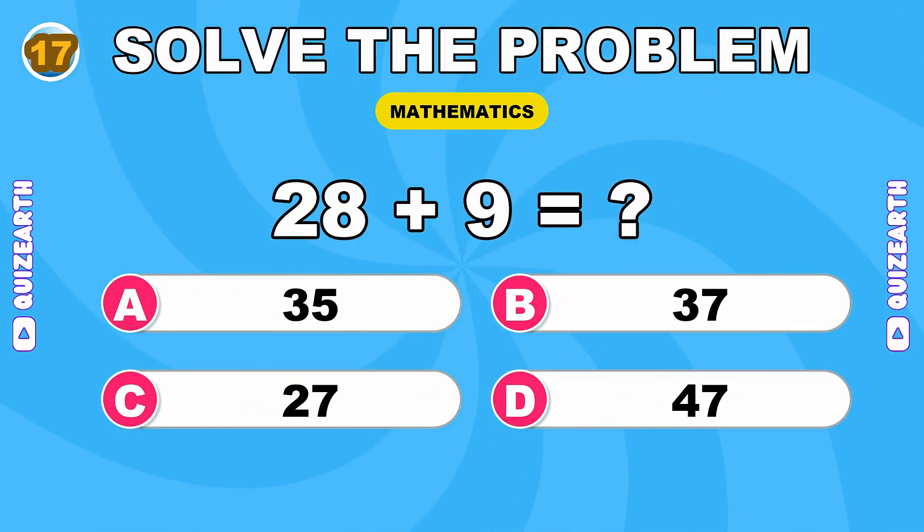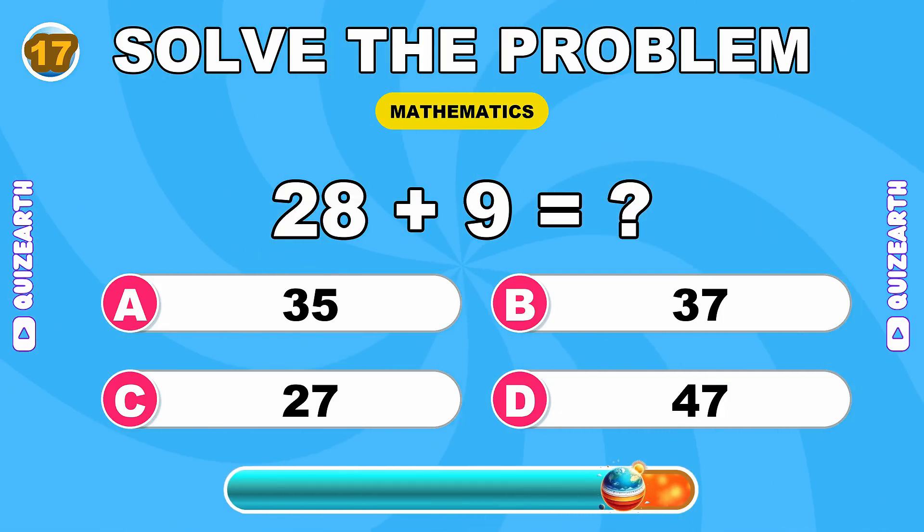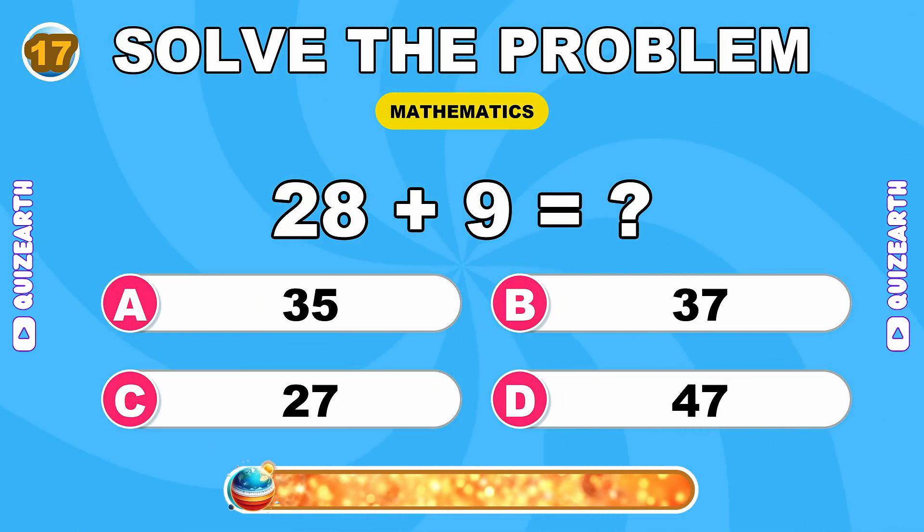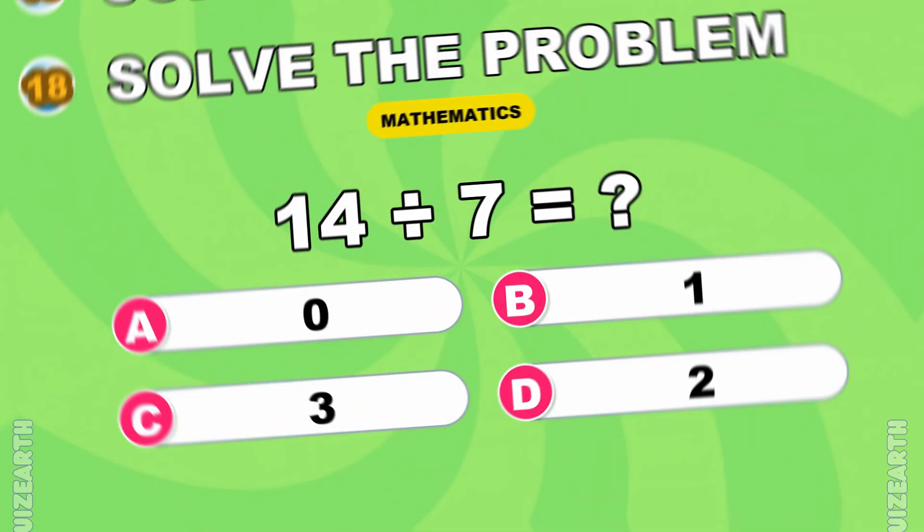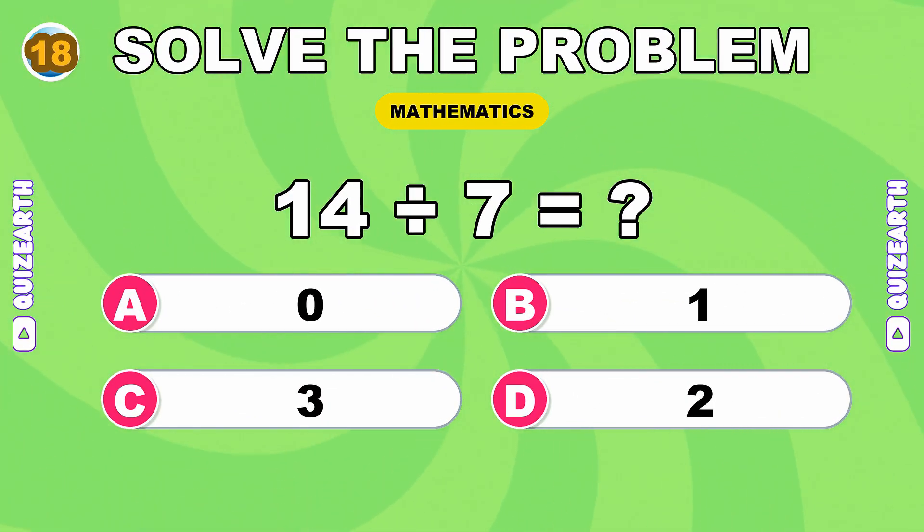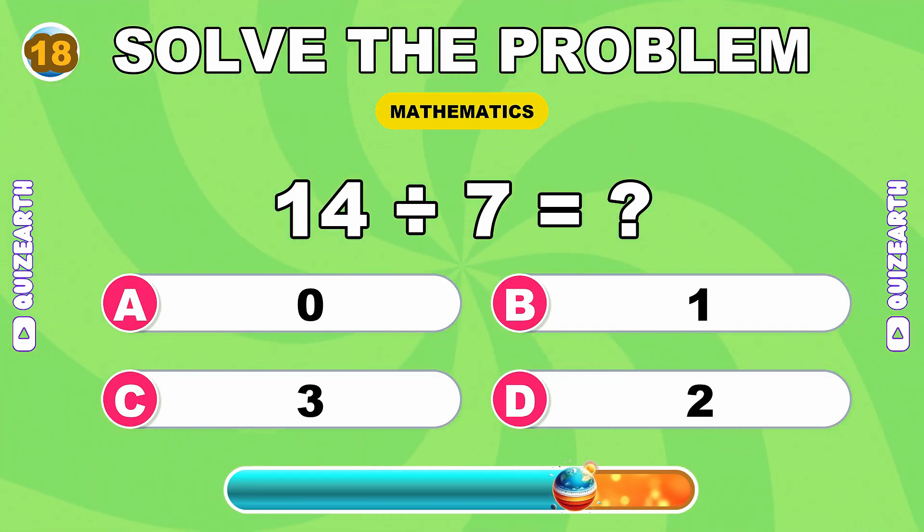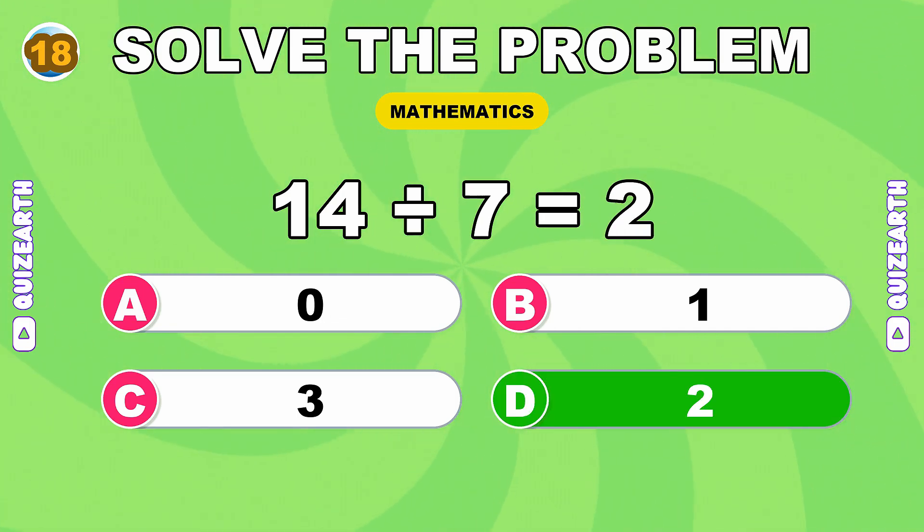How much is 28 plus 9? Lightning quick, 37. What do you get when you divide 14 by 7? On fire, 2.